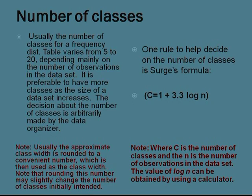The number of classes. Usually the number of classes for a frequency distribution table varies from 5 to 20 depending mainly on the number of observations in the data set. It is preferable to have more classes as the size of the data set increases. The decision about the number of classes is arbitrarily made by the data organizer.